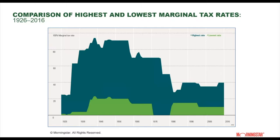That increase applies to qualified dividends and long-term capital gains. Looking at the historical spread between the top and the lowest marginal tax rate, you may be surprised to note that taxes today are actually on the lower side of what we would call historical norms.